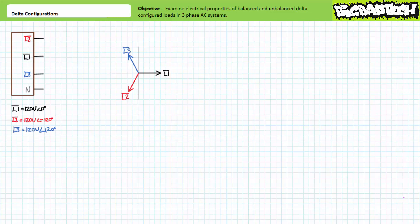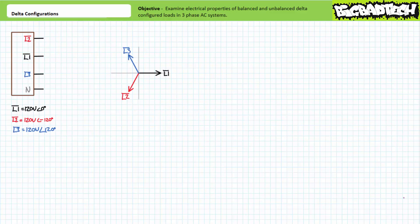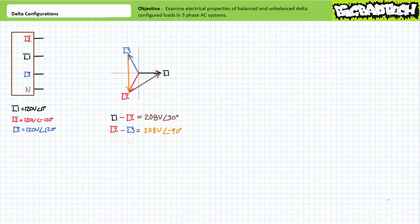Consider a 60 Hz three-phase AC system with the following values. Between L1 and the neutral terminal, there is a differential of 120 volts at an angle of zero degrees. Between L2 and the neutral terminal, there is a differential of 120 volts at an angle of negative 120 degrees. And between L3 and the neutral terminal, there is a differential of 120 volts at an angle of 120 degrees. The line-to-line differentials necessitate some minor calculations. Using phasors, L1 minus L2 is 208 volts at an angle of 30 degrees. L2 with respect to L3 is 208 volts at an angle of negative 90 degrees. And L3 with respect to L1 is 208 volts at an angle of 150 degrees.